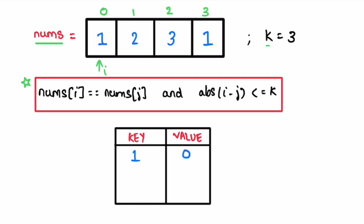Next iteration: i is pointing at the next element. It's not present in the map, so we insert it and set its index as its value — index is 1. Next iteration: i is pointing at 3. It's not present in the map, so we set that element as key and its index as value — index is 2. Now go for the next element: i is pointing at 1. We check if it is present inside the map. Yes, 1 is present inside the map.